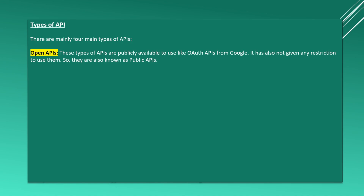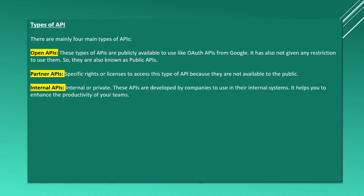For example, Google authentication. Open APIs are also known as public APIs. Next is partner API — a specific rights or license is required to access a partner API. Next is internal API, which are developed by companies to use in their internal systems. Next is composite API, which combines different data and service APIs.